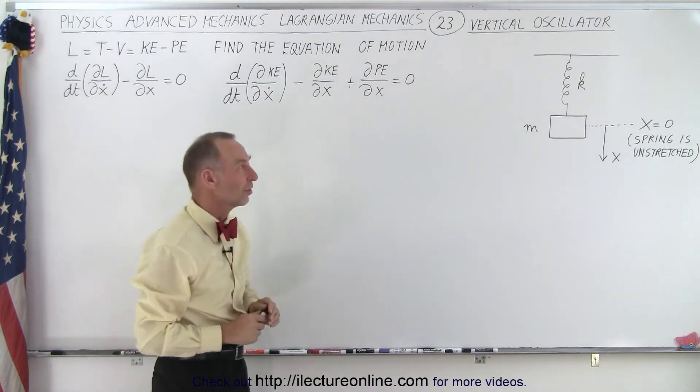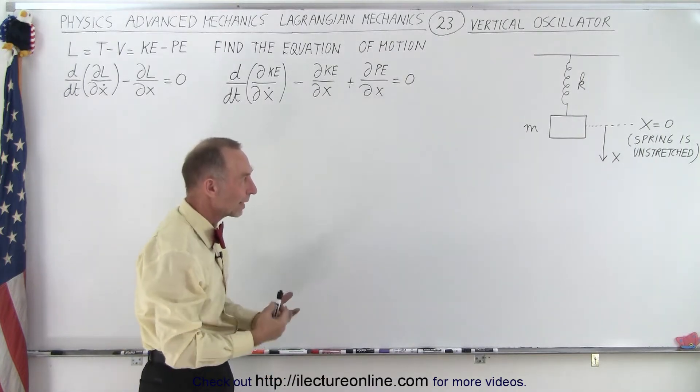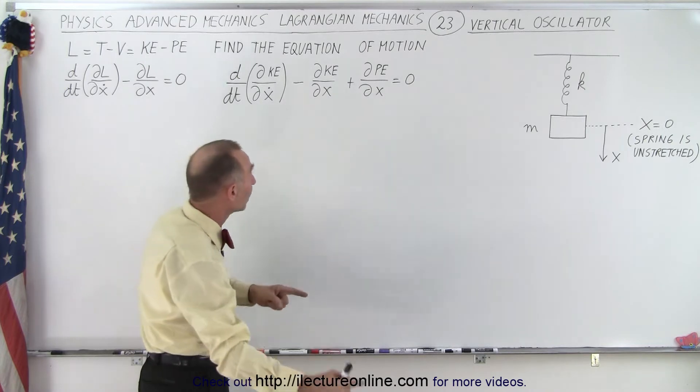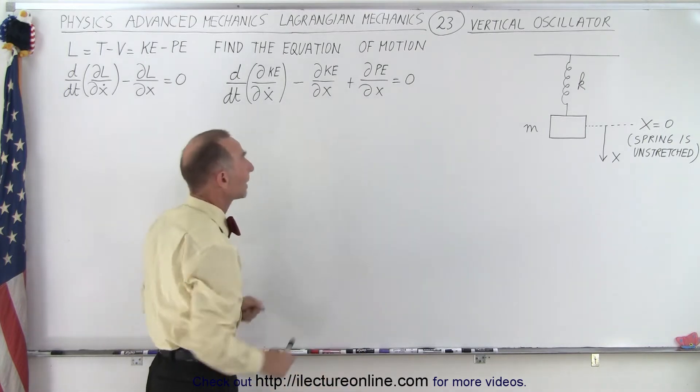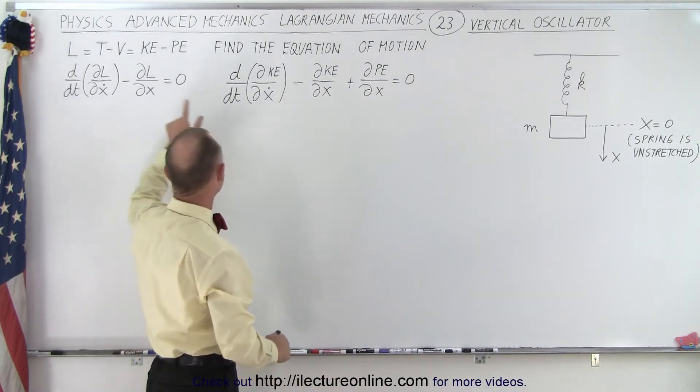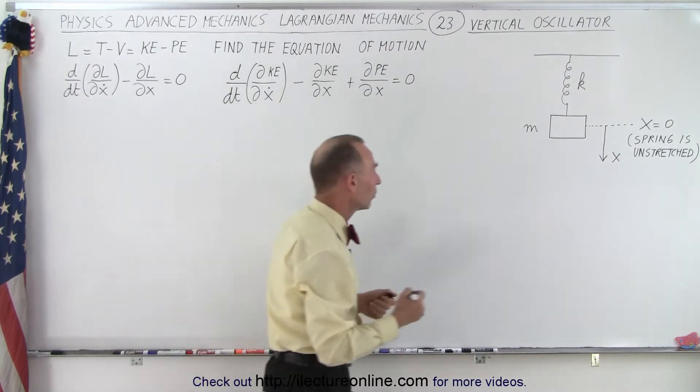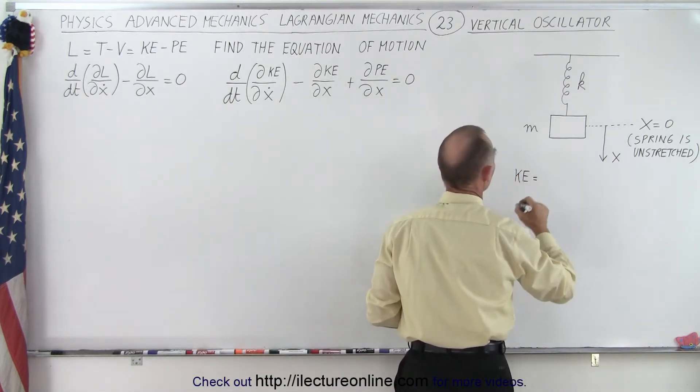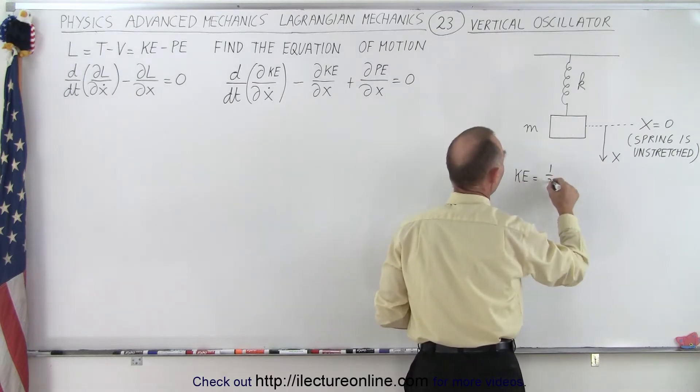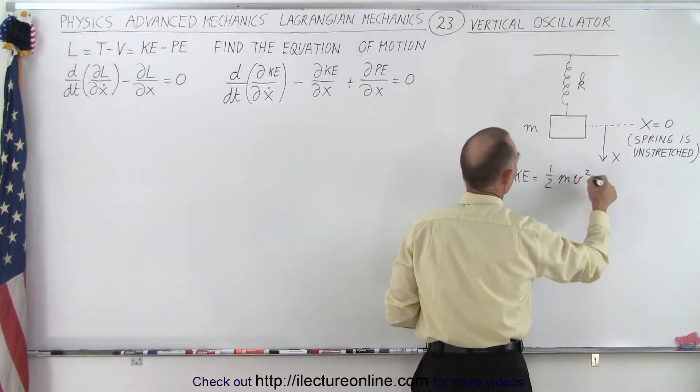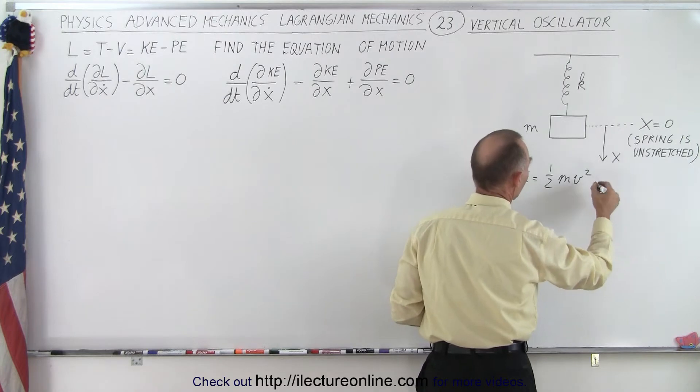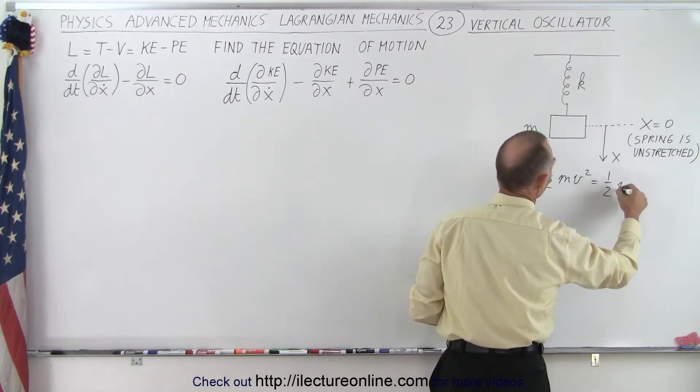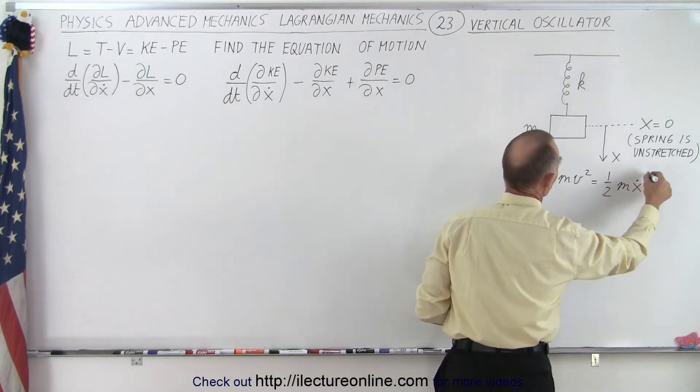The approach is roughly the same. We're first going to find the kinetic energy, then the potential energy, but then plug it directly into this equation. So first, the kinetic energy is going to be equal to one half mv squared. And of course, v can be written as x dot, so this is one half m x dot squared.